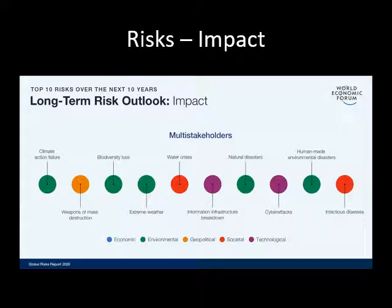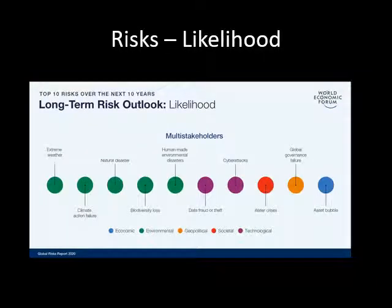Looking in more detail, the top 10 long-term impacts from the World Economic Forum include infectious disease, climate action failure, biodiversity loss, and water crisis. The top 10 likelihoods include extreme weather. The document showing top 10 impacts and top 10 likelihoods will be posted on Blackboard.